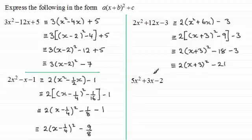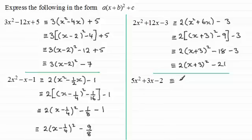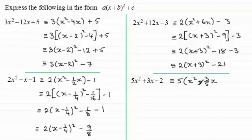Cleaning this up further gives 2 lots of x plus 3 all squared, and then minus 18 minus a further 3 is going to be minus 21. Nice and straightforward, that one. Now with this next one we're going to have one that involves a lot more fractions. We pull out the 5, have a bracket — it's going to be x squared — and for the 3x term it's going to be three fifths x. Five times three fifths x, the fives cancel, leaving just 3x. So close the bracket off and then we've got the minus 2.